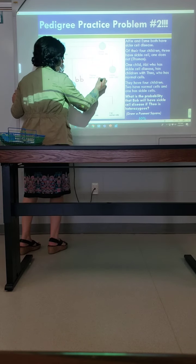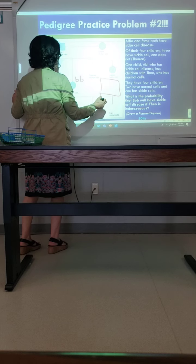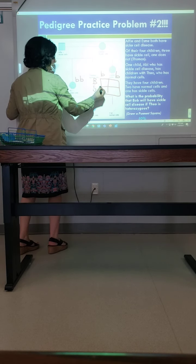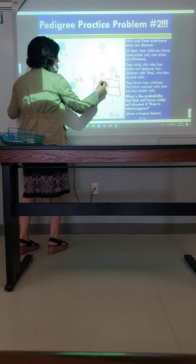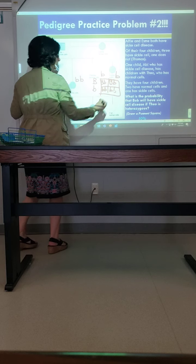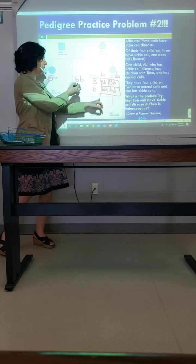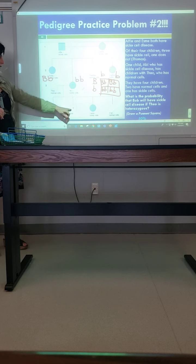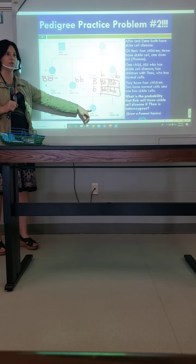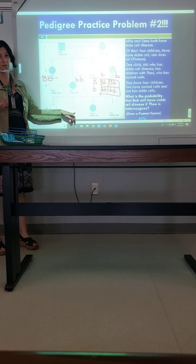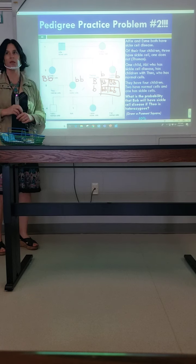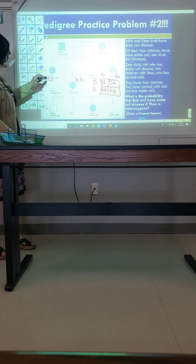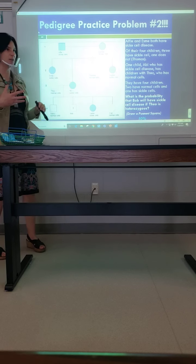Setting up the Punnett square: Abby's alleles across the top and Theo's down the side. We get big B/little b, little b/little b, big B/little b, little b/little b. So Bob will have a 50-50 chance of having sickle cell or not. That's how you can use pedigrees and Punnett squares together to make predictions. You have to be able to look at the pedigree and know that Theo would have to be heterozygous and Abby would have to be homozygous recessive.